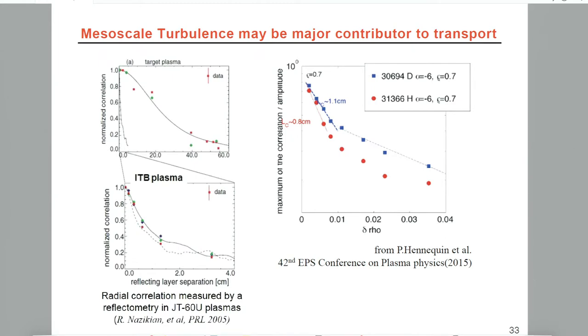When TFTR shut down, many of us Princeton people went to Japan and worked on JT-60U plasma experiments. This was a USA team supported on a Japanese machine, and in retrospect it has seen really large-scale mesoscale fluctuation before the formation of an internal transport barrier.